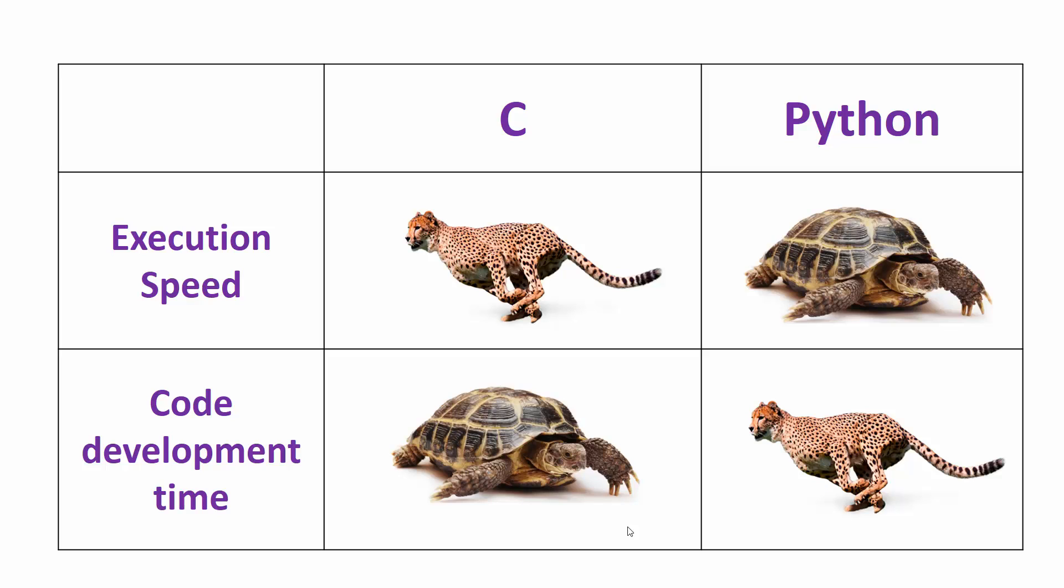I have done software development for the last 15 years using C and Python and I have always found that C code development is very slow. Compared to that, if you are writing code in Python you are minimum five times faster, so Python has an edge whenever it comes to productivity.